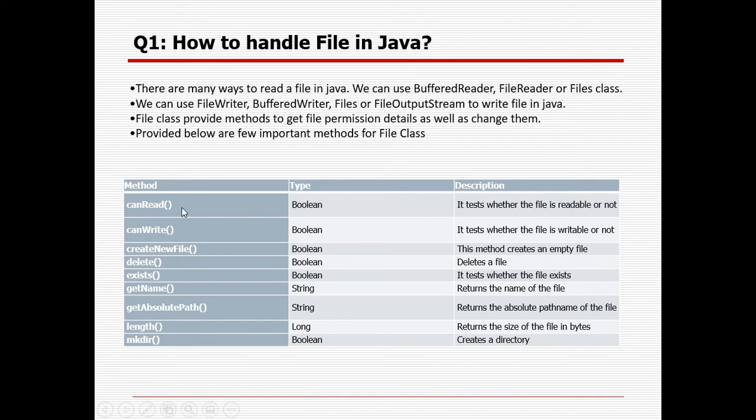Using the canRead method, we can test whether a file is readable or writable. In case it is readable, it will return true, otherwise false. In case it is read only, it will return false.